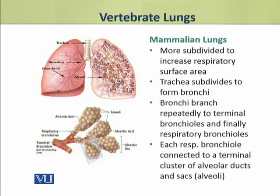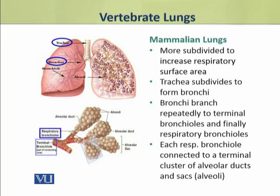Mammalian lungs are more subdivided to increase the respiratory surface area. In mammalian lungs, the trachea subdivides to form bronchi, which branch repeatedly to terminal bronchioles, and these terminal bronchioles divide to finally form the respiratory bronchioles. Each respiratory bronchiole is attached to a cluster of alveolar ducts with alveolar sacs, which form the respiratory epithelium where gas exchange occurs.